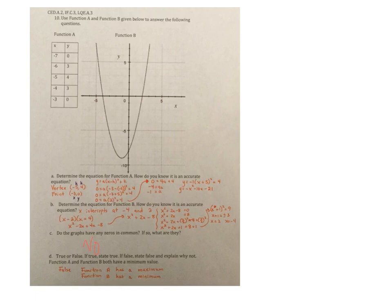And then the last one says true or false, if true state true. If false state false and explain why not. Function A and function B both have a minimum value. They don't. Okay. This one right here, the table one, this is a maximum value. So false. One has a maximum function. A has maximum, function B has a minimum.